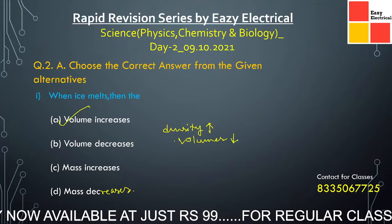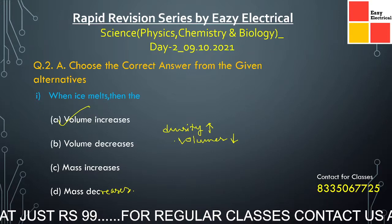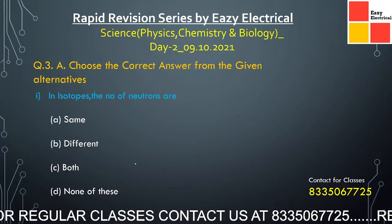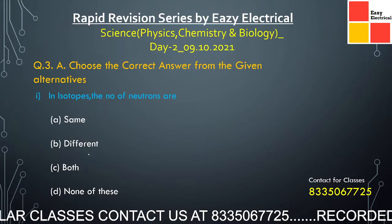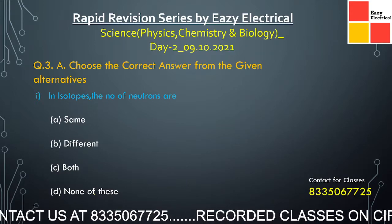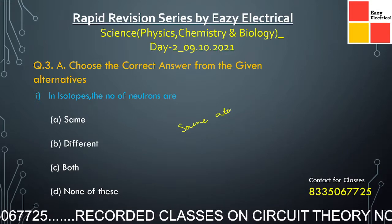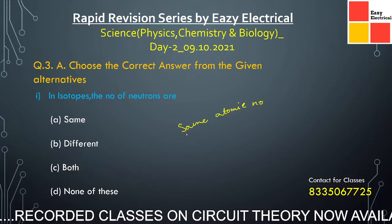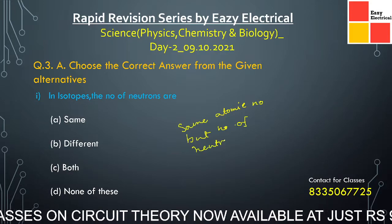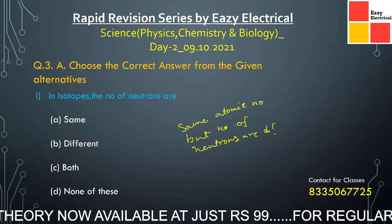For ice, the actual situation is different — the answer is volume increases. When density increases, volume decreases. Now, in isotopes, the number of neutrons are — same, different, both may be, or none of these? In the case of isotopes, there is the same atomic number but the number of neutrons are different. So the answer is 'different' — option B is the correct answer.